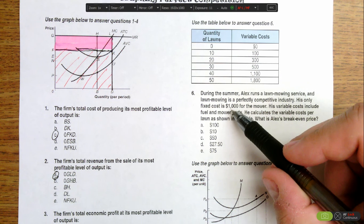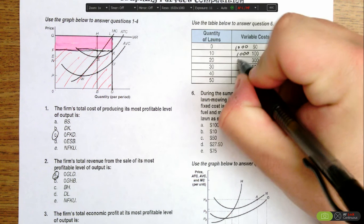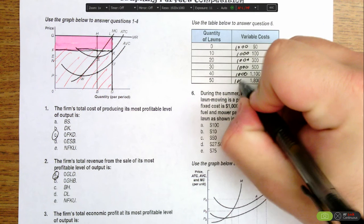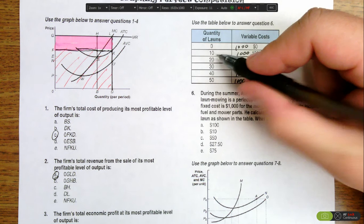We know that fixed costs are $1,000, so we add $1,000 to all of these variable costs to get our total costs. Then we divide by the quantity to get average total costs.